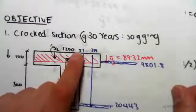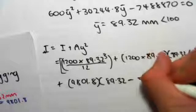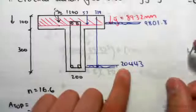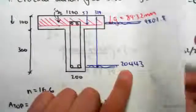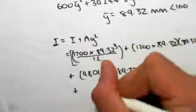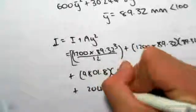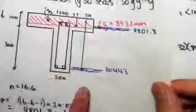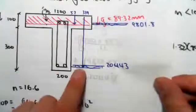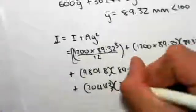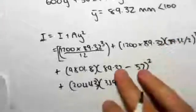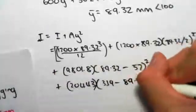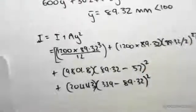Plus the last component, which is this area of steel, or now area of concrete, 20443 times by the distance from its centroid. Its centroid is at 339 from the top, that's the centroid of that layer of steel, minus the global centroid, which is 89.32, squared.